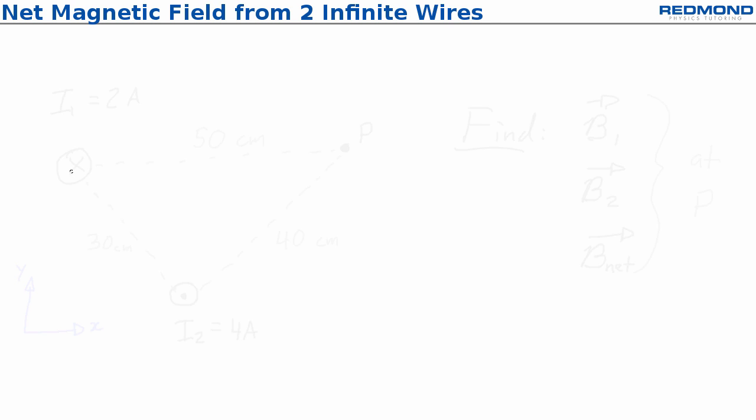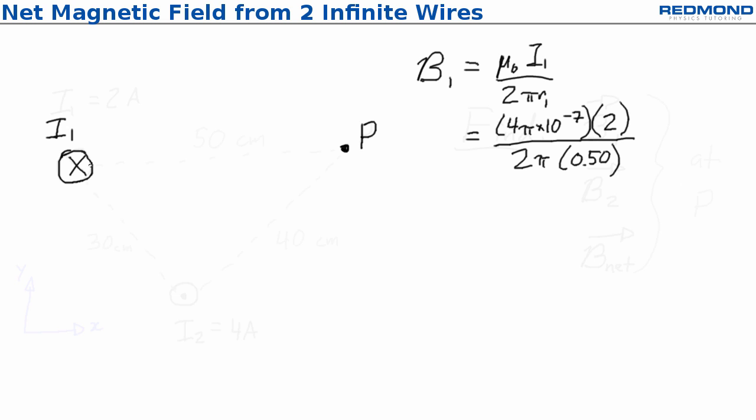I'll start with B1. The Biot-Savart result for an infinite wire gives us the magnitude. B1 is equal to mu-naught I1 over 2 pi R1, where mu-naught is 4 pi times 10 to the negative 7, I1 is 2 amps, and R1 is 0.50 meters. This simplifies to 8 times 10 to the negative 7 tesla.